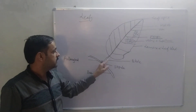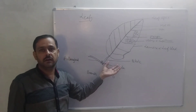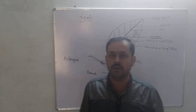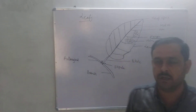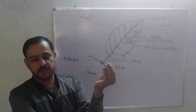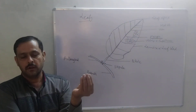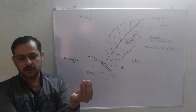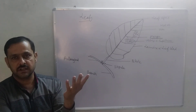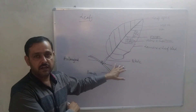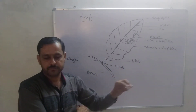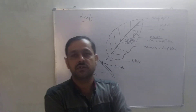In general, in monocot plants the petiole is absent, so the leaf is called sessile. And in dicot plants we can see that the petiole is present, so the leaf is called petiolate. When the leaf has a petiole-like structure it is called petiolate, and whenever the petiole is absent it is called sessile. So this is the structure of leaf.